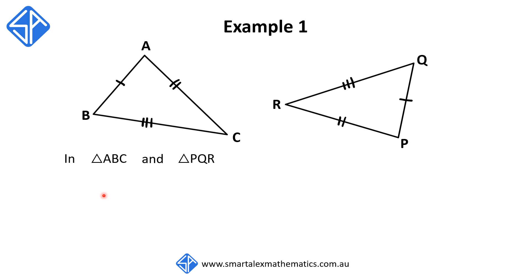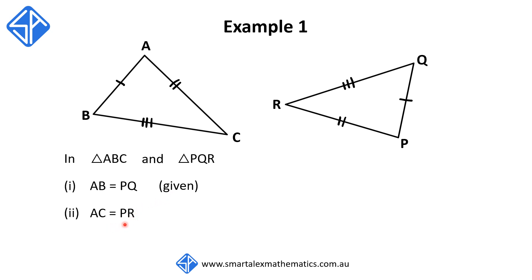After the introduction, we now need to come up with three reasons to show why they're congruent. The first reason: AB is equal to PQ — these two sides are the same, marked with one dash on the diagram, so the reason is given. The second reason: AC is equal to PR — these two sides are marked with two dashes, so the reason is given. The third reason: BC is equal to QR — both sides are marked with three dashes, so the reason is given.